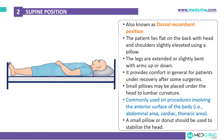The first and commonest position is the supine position, also known as the dorsal recumbent position. In this position, the patient lies flat on the back with the head and shoulders slightly elevated using a pillow. The legs are extended or slightly bent with the arms up or down. This position provides general comfort for patients under recovery after some surgeries.